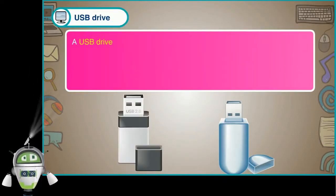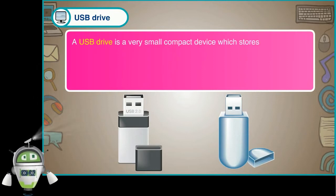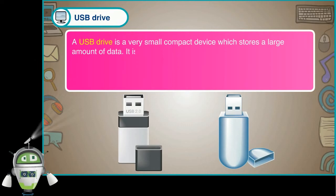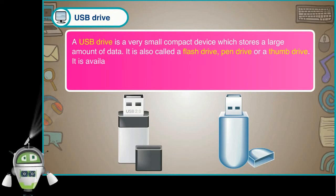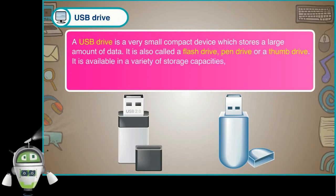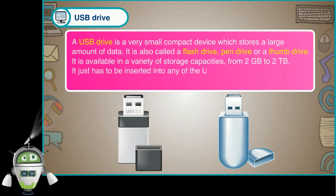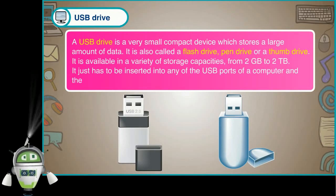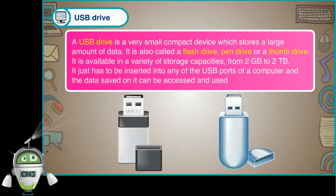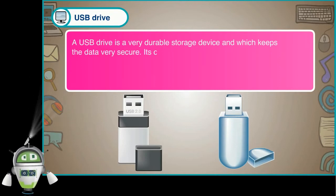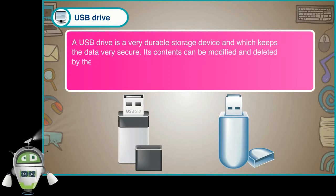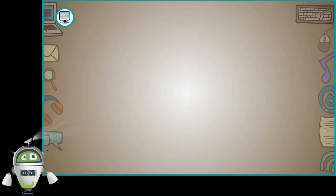A USB drive is a very small, compact device which stores a large amount of data. It is also called a flash drive, pen drive or a thumb drive. It is available in a variety of storage capacities, from 2 GB to 2 TB. It just has to be inserted into any of the USB ports of a computer and the data saved on it can be accessed and used easily. A USB drive is a very durable storage device which keeps data very secure. Its contents can be modified and deleted by the user and data can be rewritten.